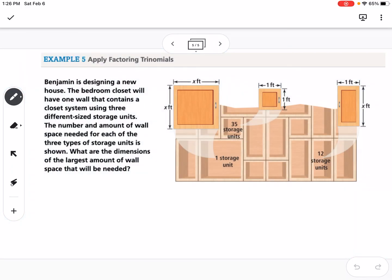Okay, so our last example is a real-life problem. So it says, Benjamin is designing a new house. The bedroom closet will have one wall that contains a closet system using three different sized storage units. The number and the amount of wall space needed for each of the three types of storage is shown. What are the dimensions of the largest amount of wall space that will be needed?